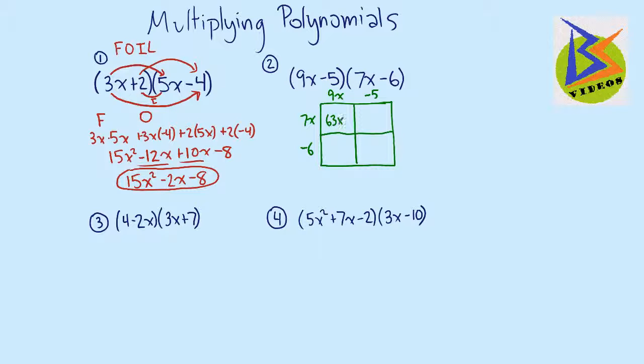Then we can go down to the bottom left one. And negative 6 times 9x is negative 54x. We'll go to the top right. 7x times negative 5 is negative 35x. And negative 5 times negative 6 is a positive 30. And then what we can do is we see that these are like terms. So now we can say 63x squared, because there's no like term to that.